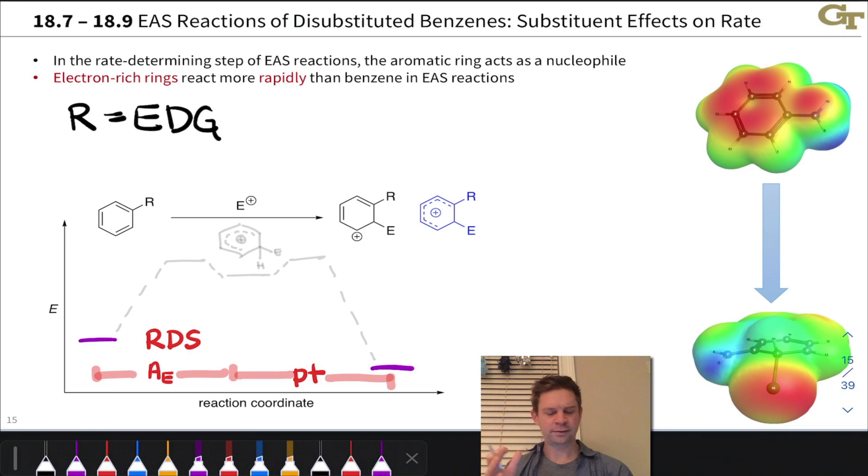To begin exploring this, I want to start with the case of R being an electron-donating group in a monosubstituted benzene with a single substituent R that is electron donating. This might be methoxy, amino, alkyl—electron-donating group of your choice, take your pick. Let's remind ourselves first of all of the standard typical mechanism of electrophilic aromatic substitution.